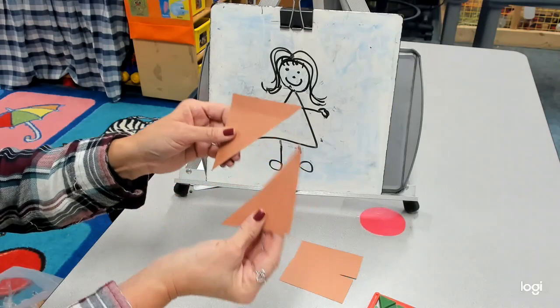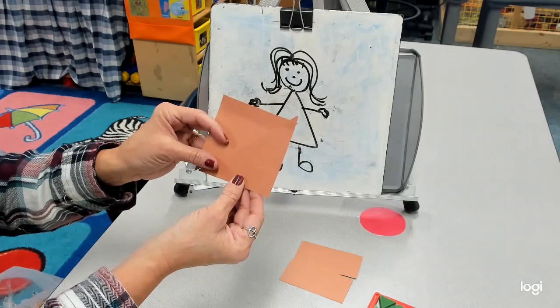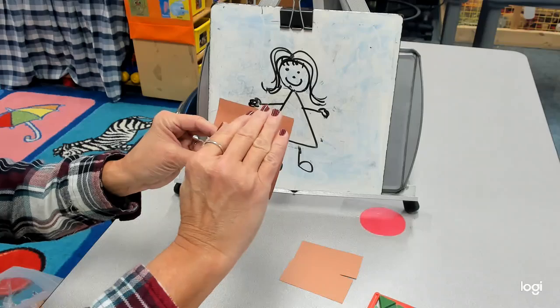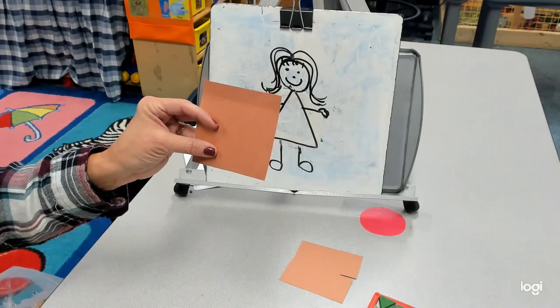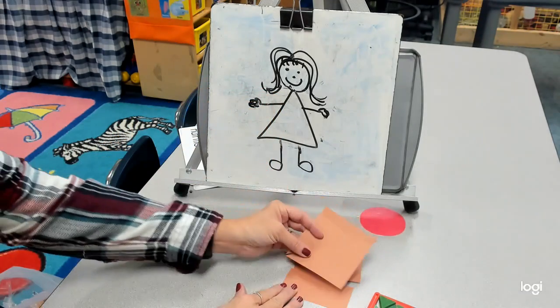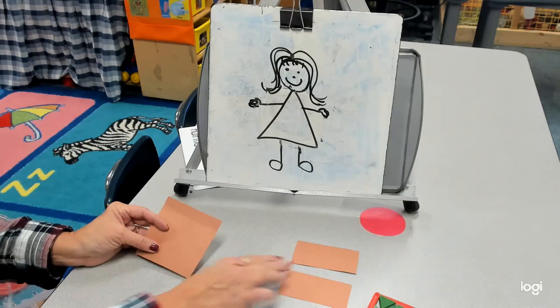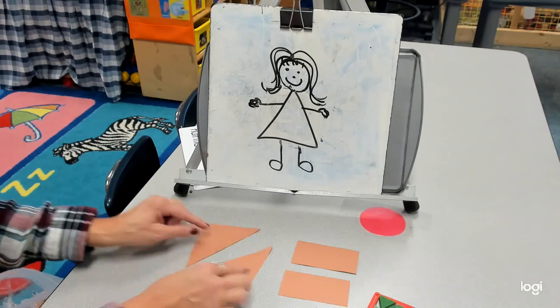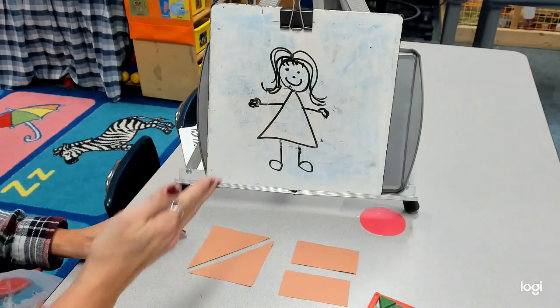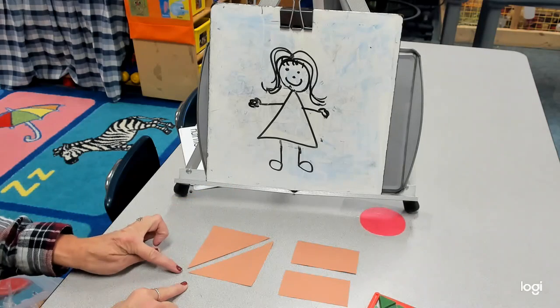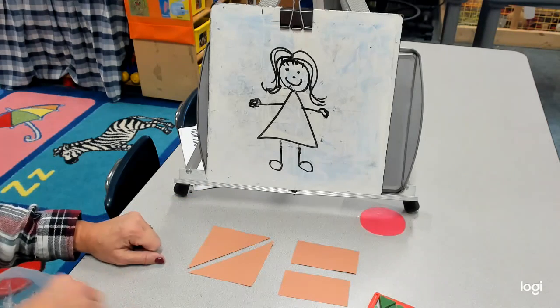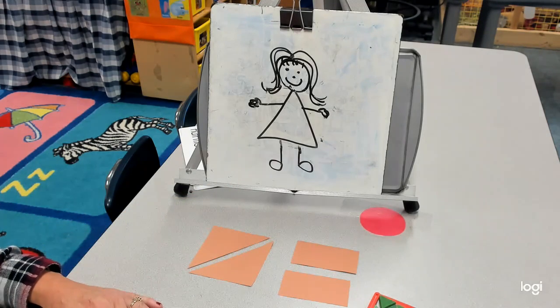So just by taking a shape and changing the way I cut it makes different shapes. So I took it and I cut horizontal and made two rectangles. And I did a diagonal line from corner to corner and made two triangles. That's pretty cool, isn't it?